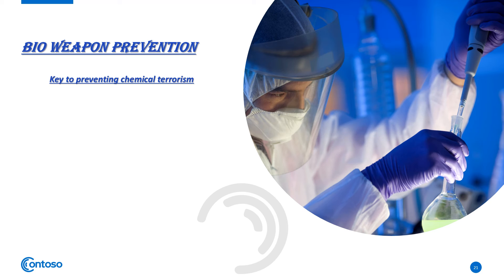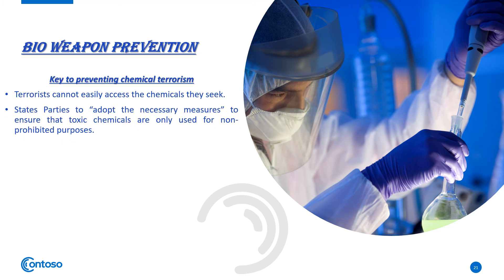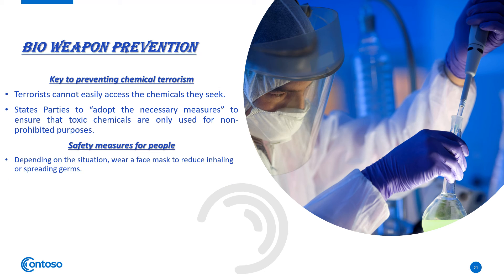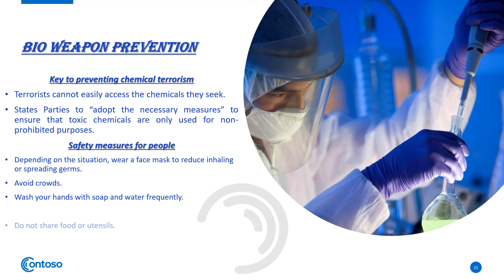Key measures to prevent chemical and biological terrorism: Not only should the Bioweapon Convention work to eliminate bio-weapons, but people and governments must also take safety precautions. States parties must adopt necessary measures to ensure toxic chemicals are only used for non-prohibited purposes. Safety measures for people include wearing a face mask to reduce inhaling or spreading germs, avoiding crowds, washing hands with soap and water frequently, not sharing food, and staying away from others.